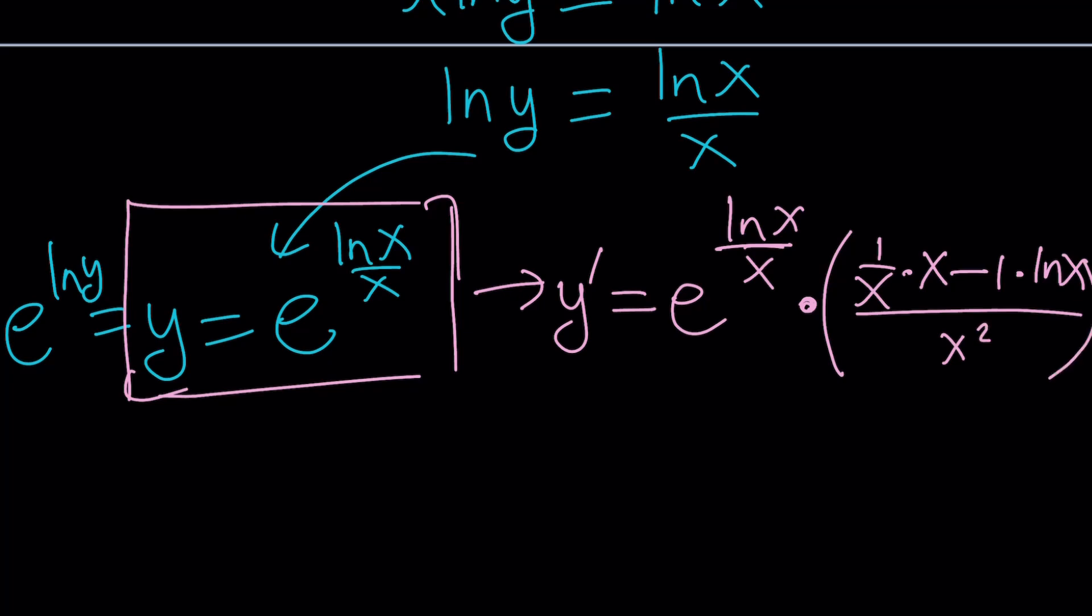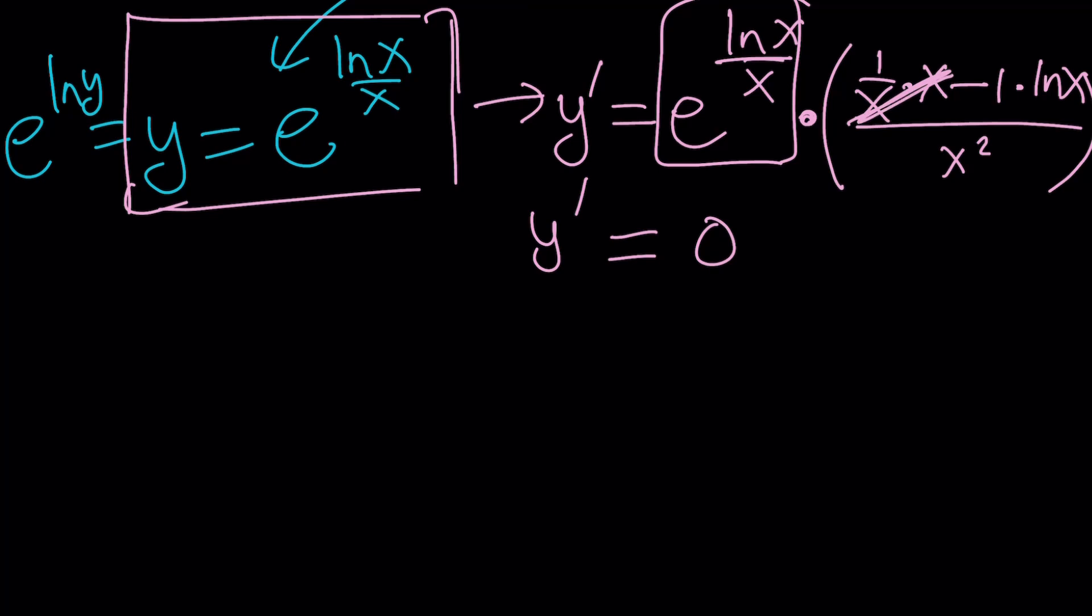And of course, our goal is setting this equal to 0. If y prime is 0, e to the ln x over x cannot be 0 even for complex values of x. So from here, we get the following: 1 minus ln x over x squared is 0. And this just means ln x equals 1. Of course, x should not be 0 in this case. And from here, we get x equals e. Great.